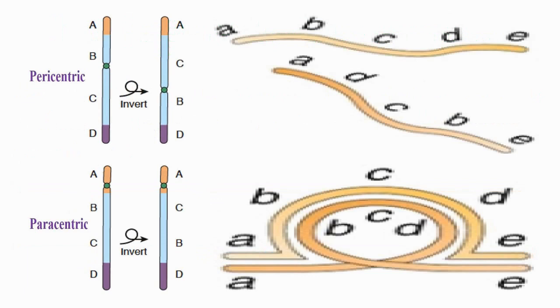These figures clearly show the mechanistic differences between paracentric and pericentric inversions inside the chromosome.